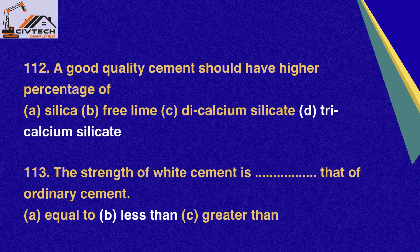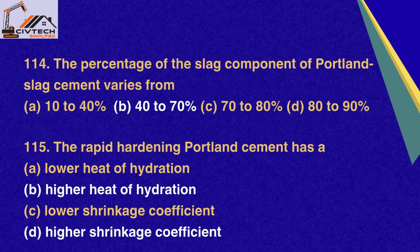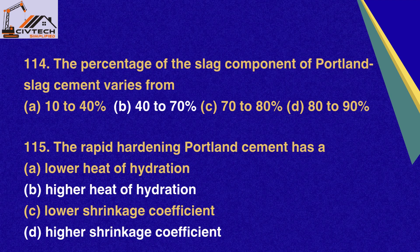Question 113. The strength of white cement is that of ordinary cement: A. Equal to, B. Less than, C. Greater than. Correct option B: Less than. Question 114. The percentage of the slag component of Portland slag cement varies from: A. 10–40%, B. 40–70%, C. 70–80%, D. 80–90%. Correct option B: 40–70%. Question 115. The rapid hardening Portland cement has: A. Lower heat of hydration, B. Higher heat of hydration, C. Lower shrinkage coefficient, D. Higher shrinkage coefficient. Correct options B and D: Higher heat of hydration and higher shrinkage coefficient.